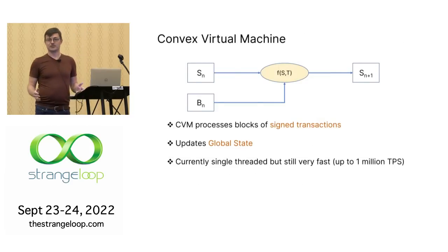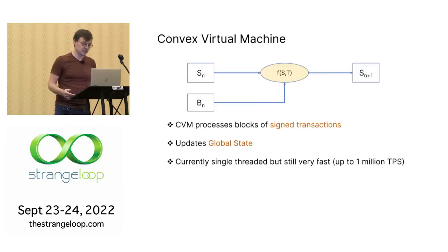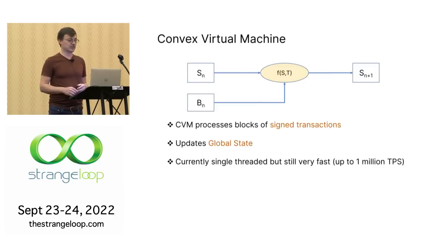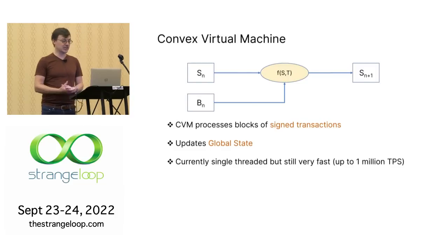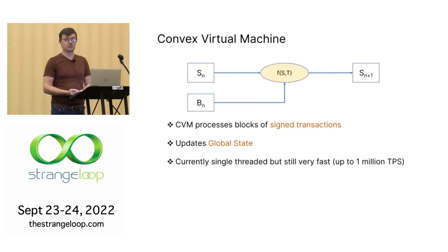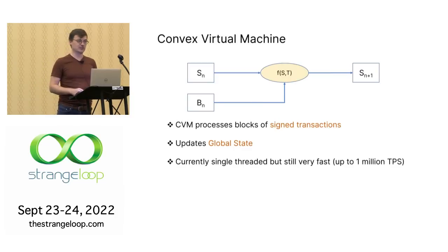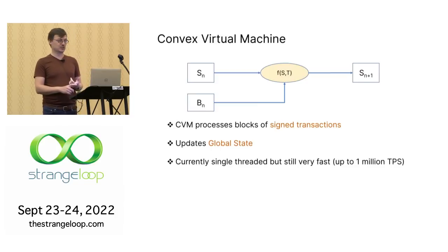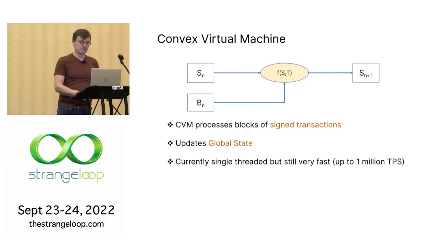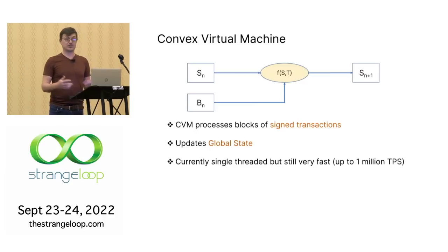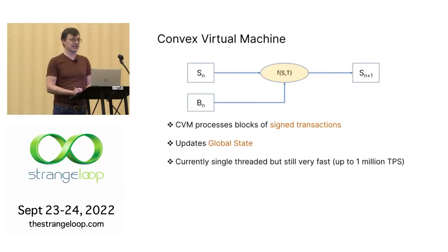We actually want to do something with this consensus algorithm — this is the Convex Virtual Machine, or CVM. It takes blocks of transactions and updates a global state. Each instance of the CVM has a global state, and we actually run it single-threaded. It could potentially be parallelized, but it doesn't seem necessary — it's already very fast, getting about a million transactions per second locally. We have very efficient data structures, so updating these Merkle trees can be very fast. And because it's single-threaded, there's no locking overhead. It's a lean and fast system.